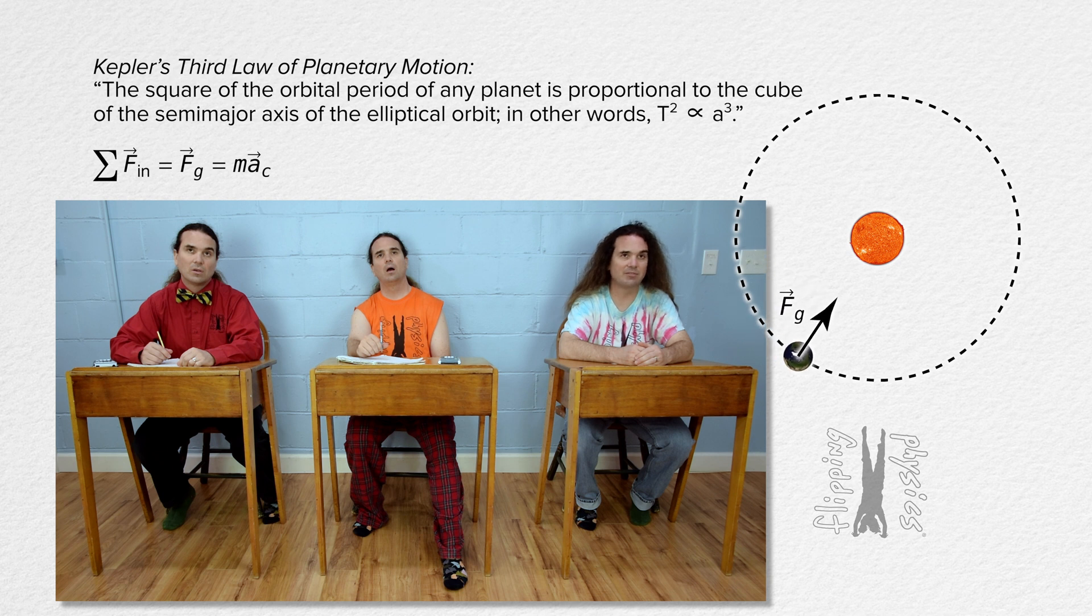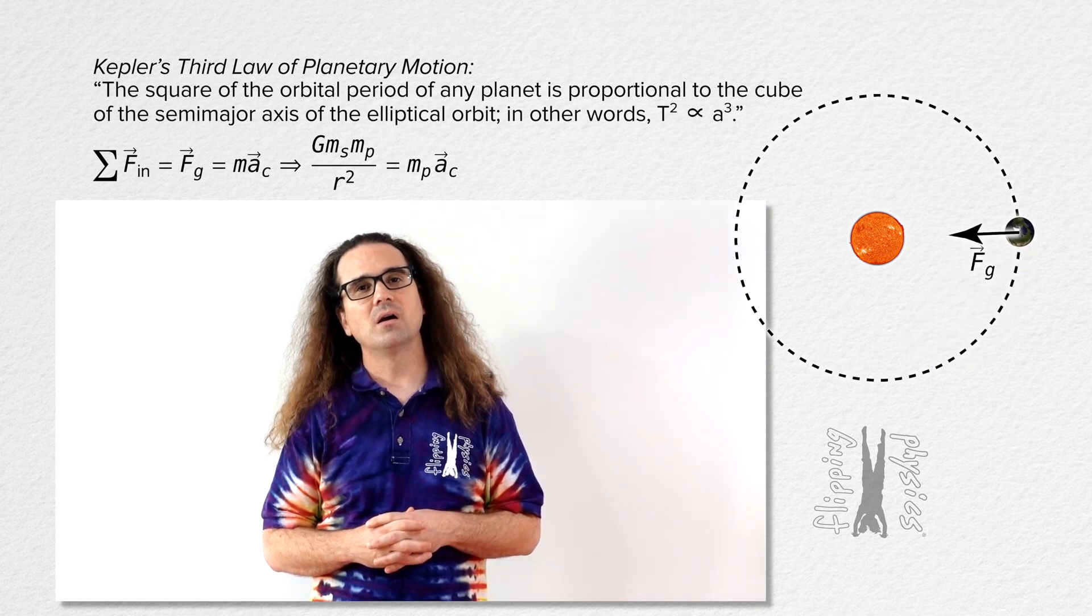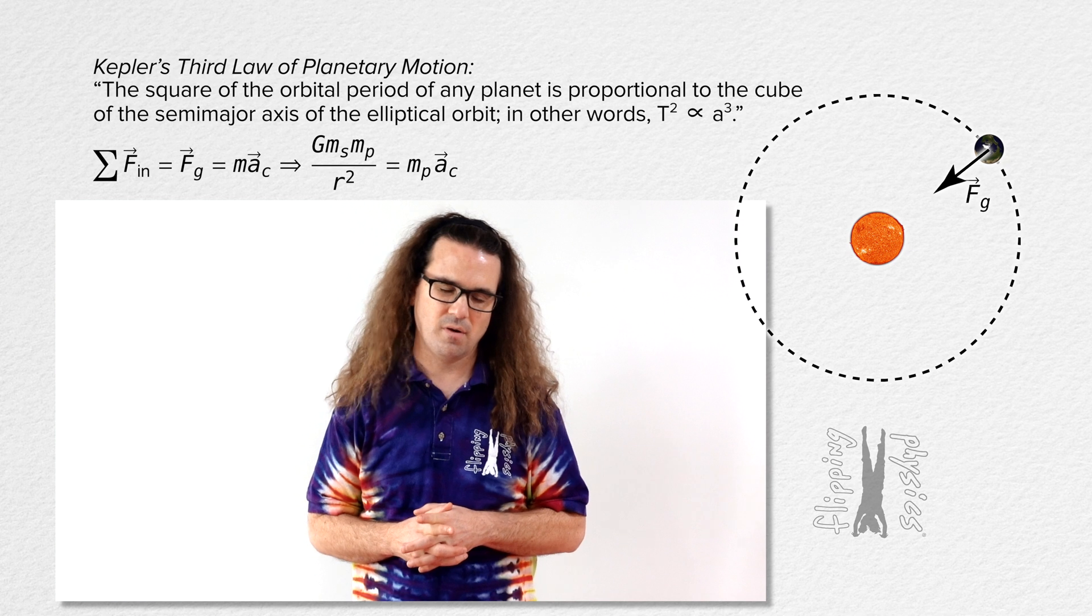Substituting in equations, we have the universe's gravitational constant times the mass of the Sun times the mass of the planet, all divided by the square of the distance between the center of mass of the Sun and the center of mass of the planet.